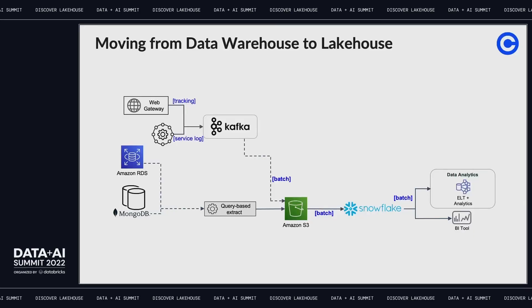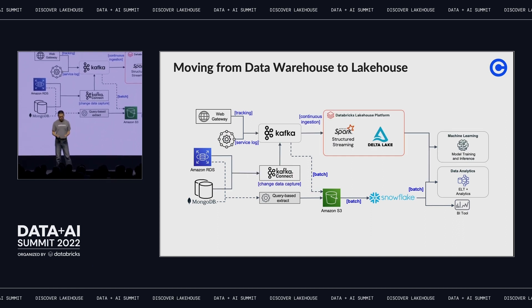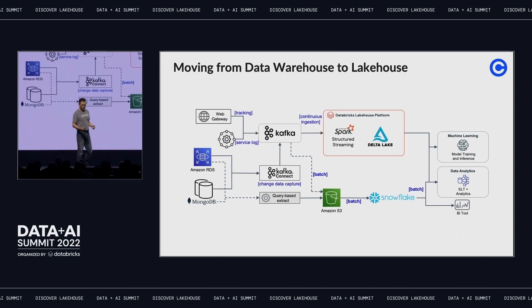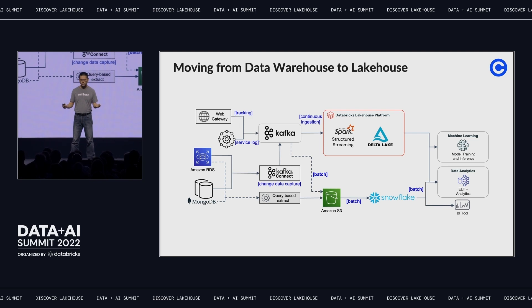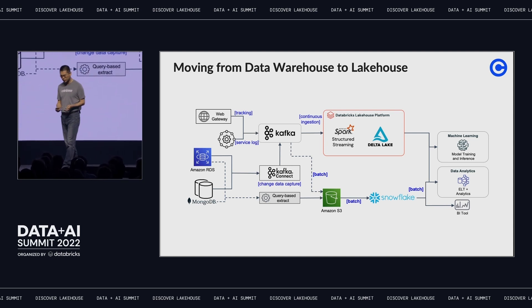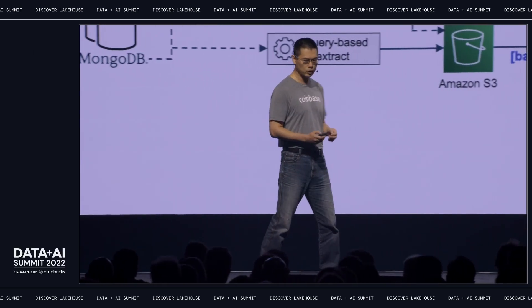Let me walk you through the history of our architecture. Coinbase started with Redshift. Around 2019, we switched to Snowflake, and at that time we primarily had daily batch processing with very few hourly jobs for critical tables. This is where we introduced Databricks into the landscape. We have Kafka with change data capture, and we can leverage continuous ingestion on top of Delta Lake with structured streaming. This enables us to have data much faster and power a lot of hourly processes.